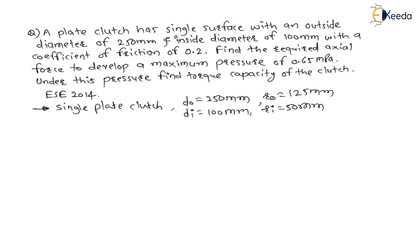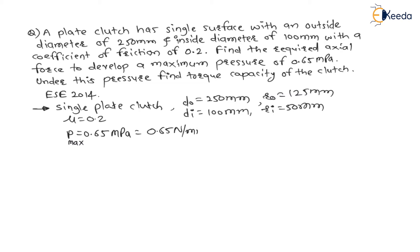The coefficient of friction μ is given as 0.2. We need to find the required axial force to develop a maximum pressure of 0.65 MPa, i.e. 0.65 N/mm². Also, we need to find the torque capacity of the clutch under this pressure.